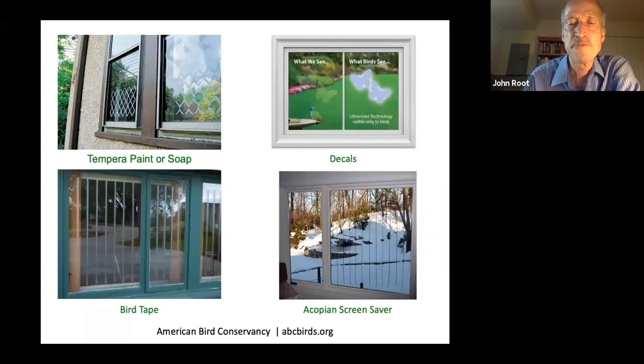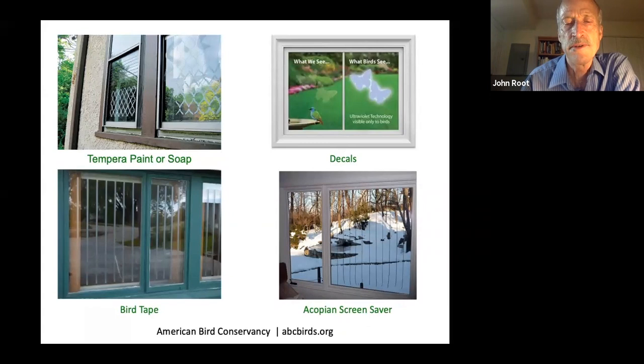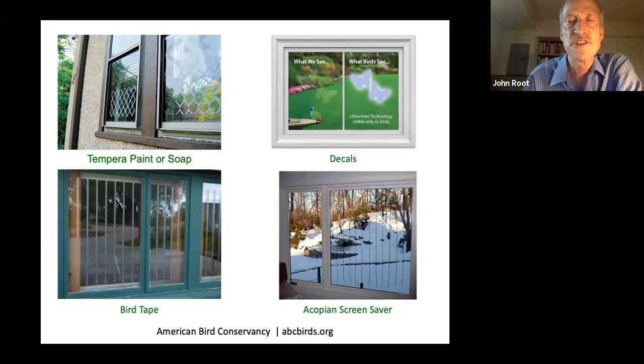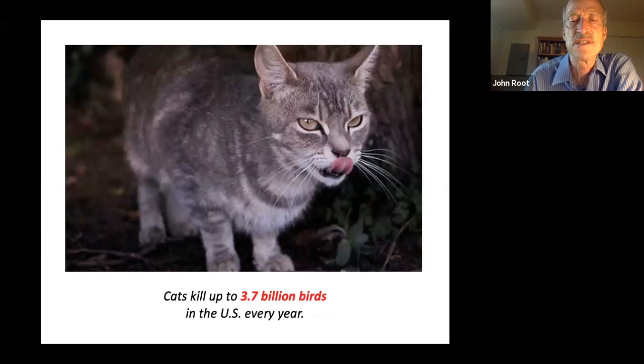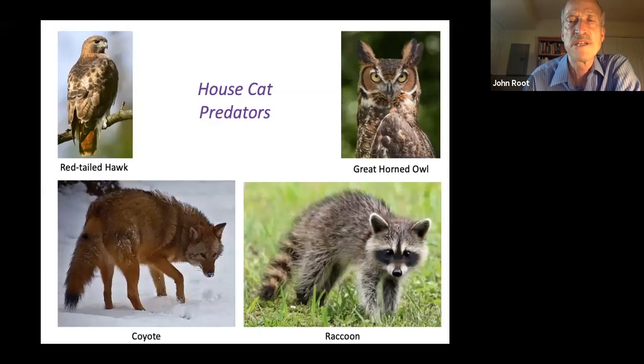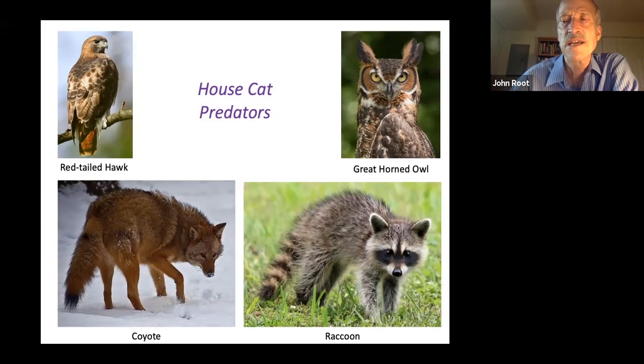Abcbirds.org is a good resource to find different ways to make your windows visible to birds. I'll provide all the URLs at the end of the program — if you send an email to info@johnroot.net. Cats kill up to 3.7 billion birds in the US every year; these are both feral and house cats. Perhaps it'll motivate folks to keep their cats inside if they realize that there are wild animals that can make a meal of a cat, and there are also other cats and dogs out there that could be a menace to a house cat left outside.